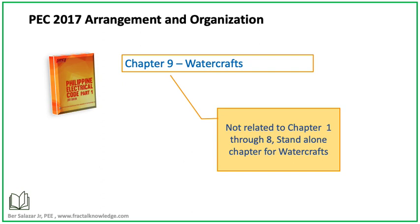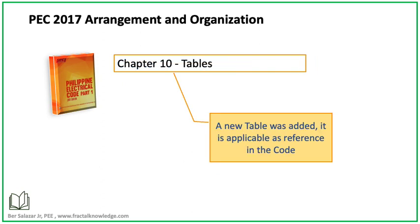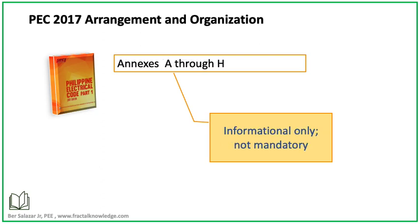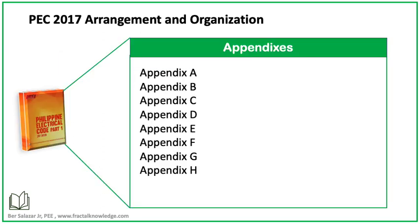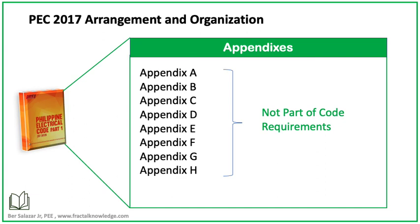Chapter 9 is about watercraft. Before, this chapter was separated — it was volume number 2 of PEC, dedicated to watercraft. Some questions in the RME exam were formulated from this chapter related mostly to wiring methods in watercraft. The last structure is Chapter 10, dedicated to tables applicable when referencing in the code. And we have annexes, which you can read independently. Annexes are not mandatory. PEC 2017 contains 8 appendices from A to H. This is supportive information only — it can stand alone, but it is not enforceable. Appendices are not part of the code requirements; they are included for supplementary or informational purposes only.